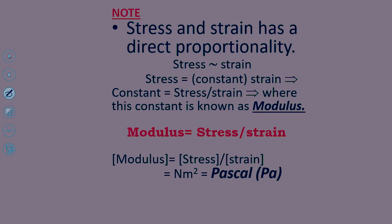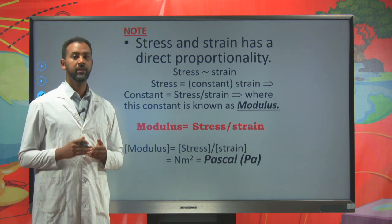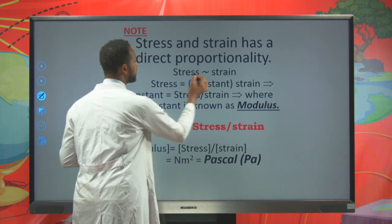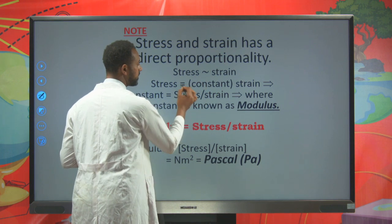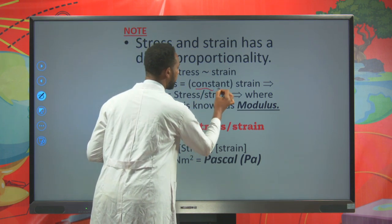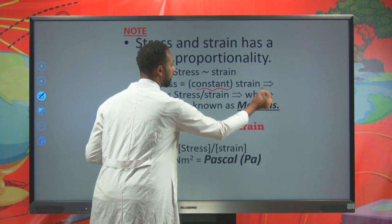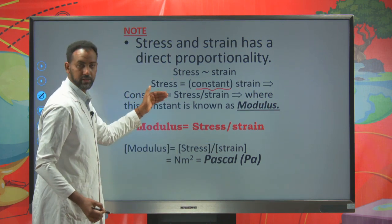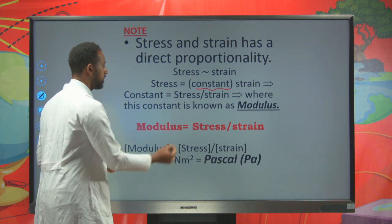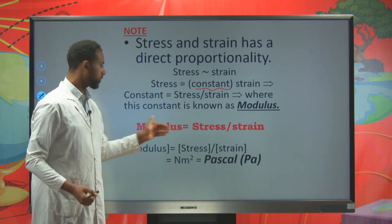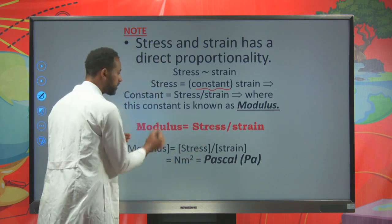Now let's see the relation between stress and strain. Stress and strain have a direct proportionality under a given limit. Converting the proportionality to an equation, we introduce a constant K, giving: stress equals K times strain. That constant K equals stress divided by strain, and is known as the modulus. Modulus measures the ratio of stress to strain. The SI unit of modulus is the same as stress — Pascal or Newton per meter squared — since strain is dimensionless.